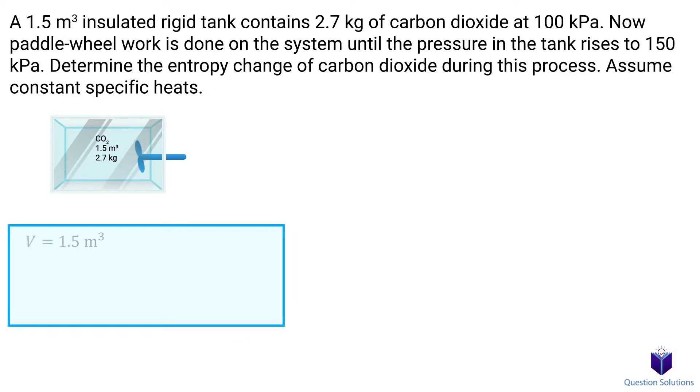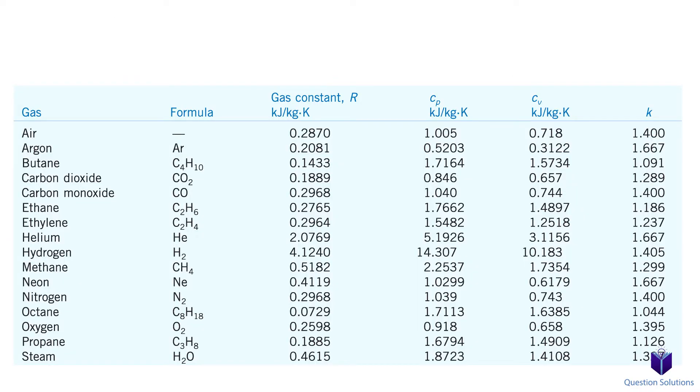We can start by writing down what we know. The volume of the tank is 1.5 cubic meters, and it contains 2.7 kilograms of carbon dioxide. The initial pressure is 100 kilopascals, and the final pressure is 150 kilopascals. We will also need the specific heat of carbon dioxide, which can be found using a table. Note that the specific volume will not change during the process, so we need the constant volume value.